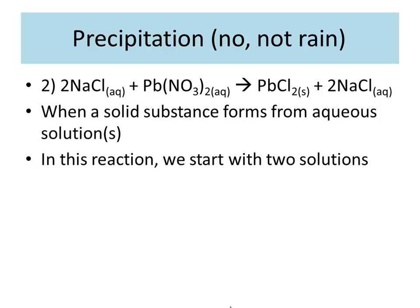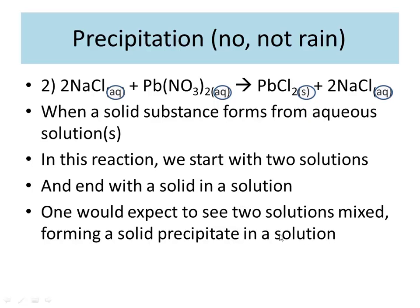So in this reaction, we start with two aqueous solutions and we end with a solid in a solution in our products. That's what we produce. So that solid is called the precipitate. So what we expect to start with is we mix two solutions and we form a solid in a solution. That's what we would expect to see.